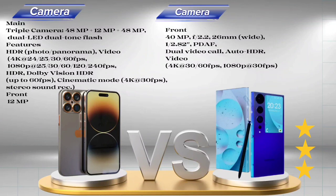Samsung Galaxy S23 Ultra front camera: 40 MP, f/2.2, 26 mm wide, PDAF. Features: Dual video call, Auto HDR. Video: 4K at 30/60 FPS; 1080p at 30 FPS.